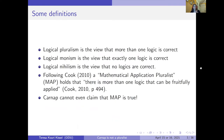As with any presentation, there are a lot of terms of art here, so I want to lay out what I'm going to mean by many of them. Logical pluralism is the view that more than one logic is correct; monism, the view that exactly one logic is correct; and nihilism, the view that no logics are correct. For most of this presentation I'm going to focus on what Cook calls mathematical application pluralism, or MAP, which holds that there is more than one logic that can be fruitfully applied. I'm going to argue that Carnap can't even claim that something like MAP is true.